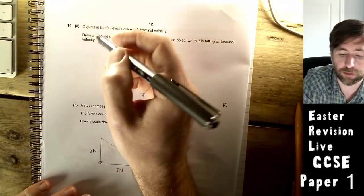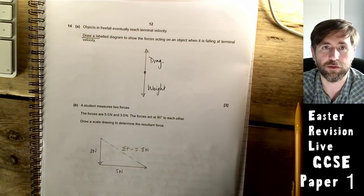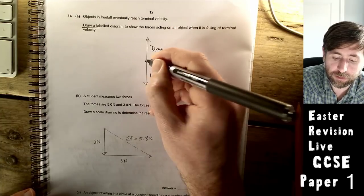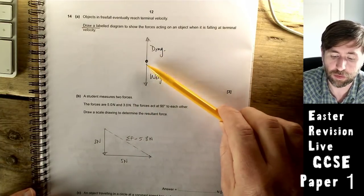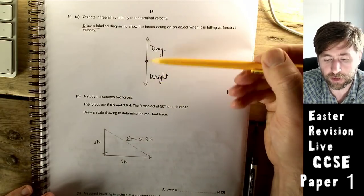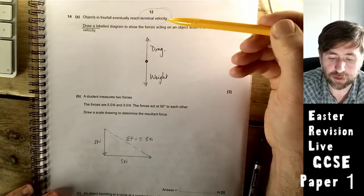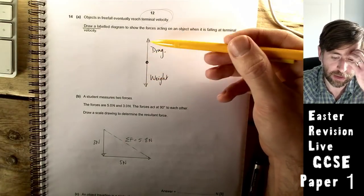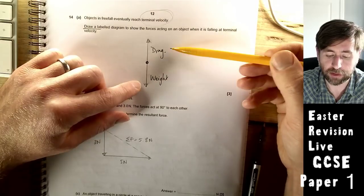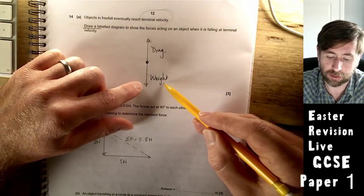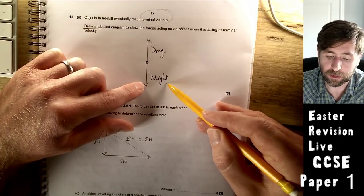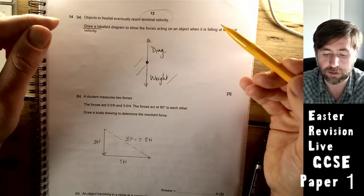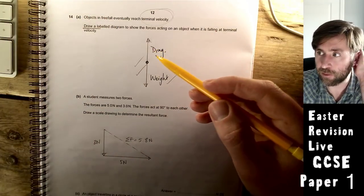Objects in free fall eventually reach terminal velocity. Draw a labeled diagram to show the forces acting on an object when it's falling at terminal velocity. For this new GCSEs, people's free body diagrams are pretty poor. Do it in pencil with a ruler. You're just considering the forces on one object. Terminal velocity is a state where the weight and drag are equal, so there's no longer accelerating. You need them to be equal lengths, opposite directions, and the correct names. Not gravity, gravitational force. One for weight and drag or air resistance, one for equal lengths and one for opposite directions.